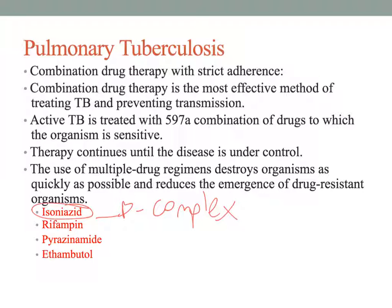TB is often found in homeless patients who are also alcoholics, which can make treatment very difficult. Rifampin is another medication in the regimen, and alcohol cannot be consumed while taking it either. Most of these drugs have toxic effects on the liver, which is a major reason alcohol is prohibited.